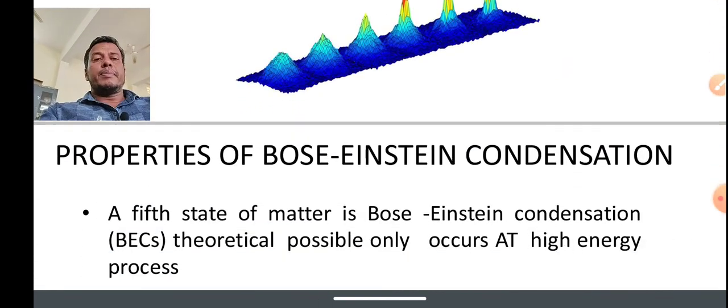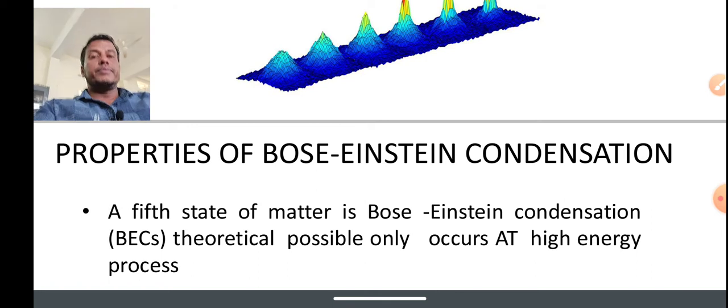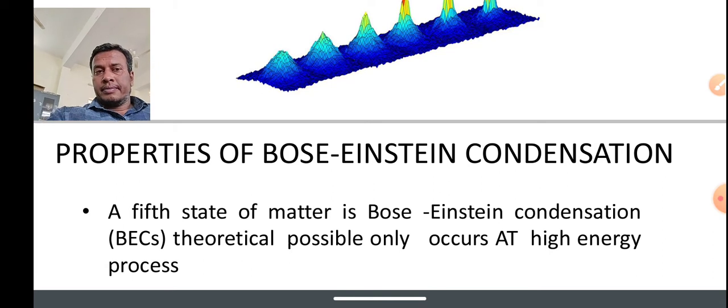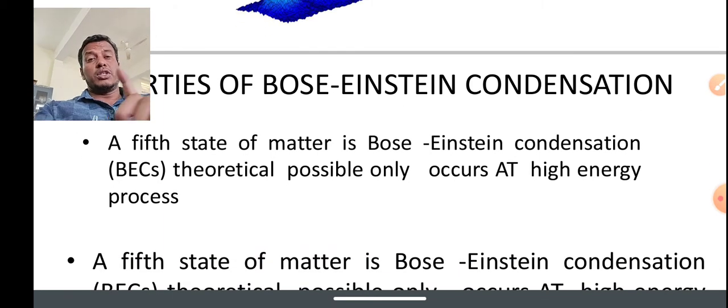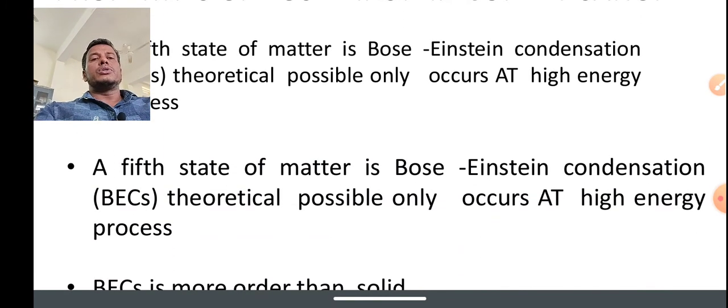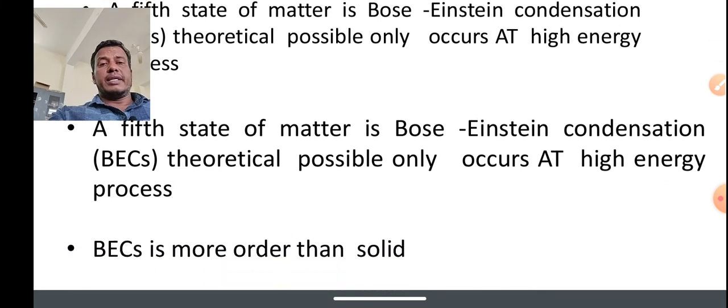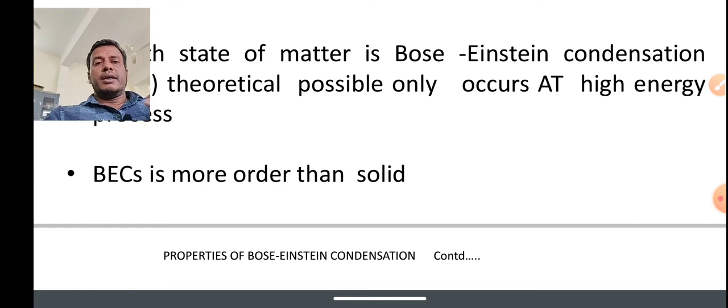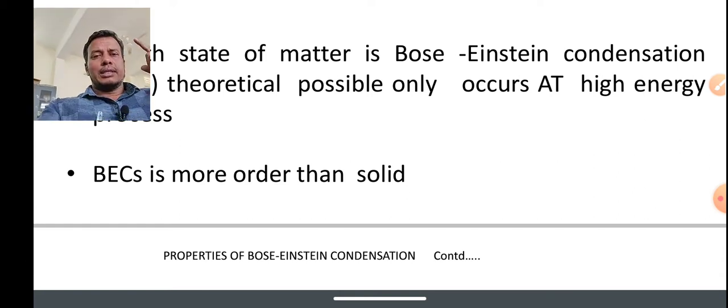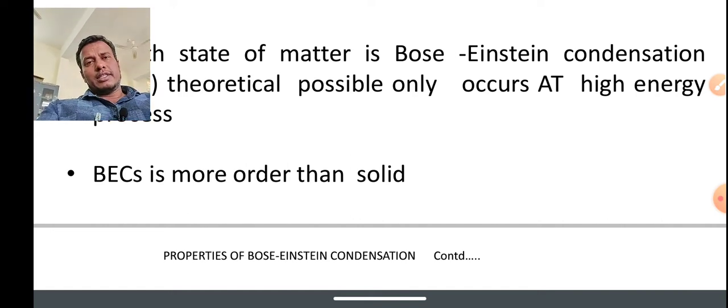What are the properties of Bose-Einstein condensations? It is theoretically possible at low energy processes. It is the fifth state of matter. Bose-Einstein condensation is only theoretically available. So this is the fifth state of matter. In Bose-Einstein condensations, solids are less ordered, but BE condensation is more ordered than solids.